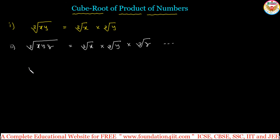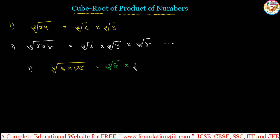For example, the first question is: find the cube root of 8 multiplied by 125. Do not multiply 8 into 125 and then do prime factorization — that is lengthy. We can split it into parts: cube root of 8 multiplied by cube root of 125, find each separately. Cube root of 8 is 2, as we did previously.